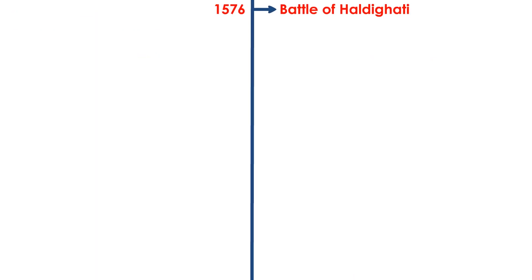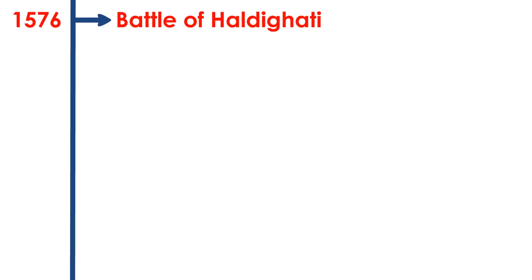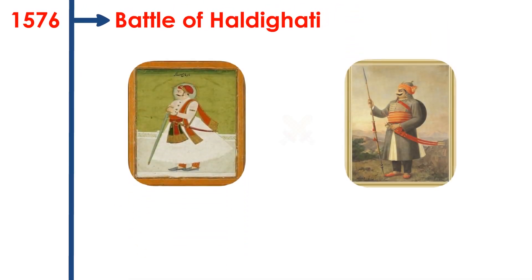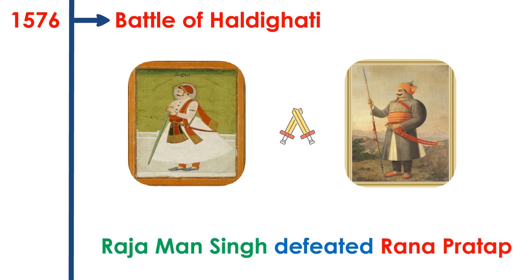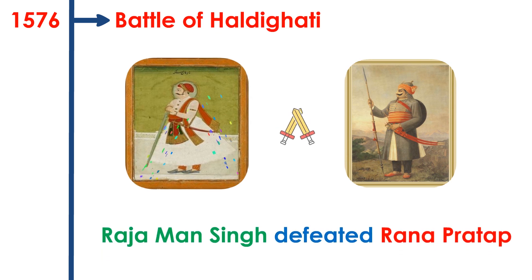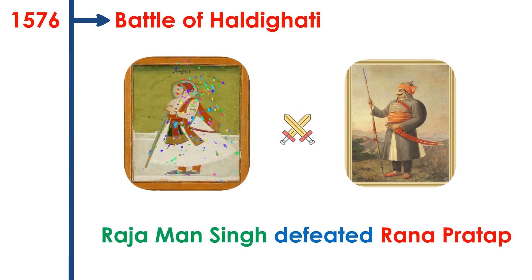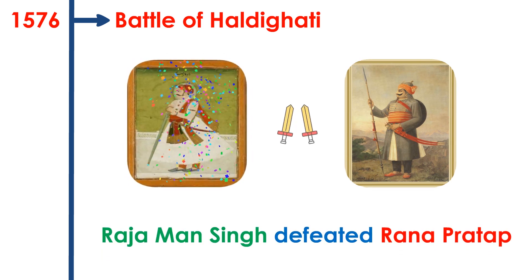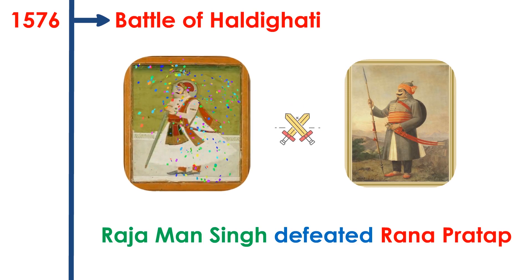Battle of Haldighati. The battle was fought between Raja Man Singh of the Mughals and Rana Pratap of Mewar, in which Raja Man Singh defeated Rana Pratap.